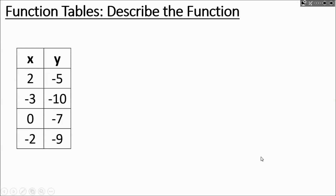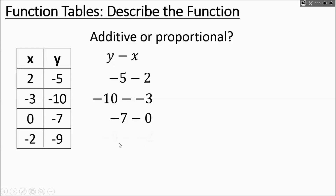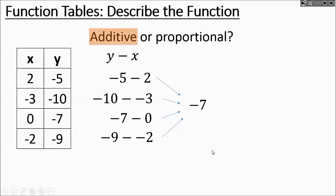In this next table, is it additive or proportional? We check division and they don't divide to the same thing, so let's try y minus x. Negative 5 minus 2, negative 10 minus negative 3 — remember the double negative becomes a plus — negative 7 minus 0, and negative 9 minus negative 2. So negative 10 plus 3 and negative 9 plus 2 — they all work out to negative 7. So we're subtracting 7 from every x value, making it an additive relationship. The rule is y equals x minus 7.